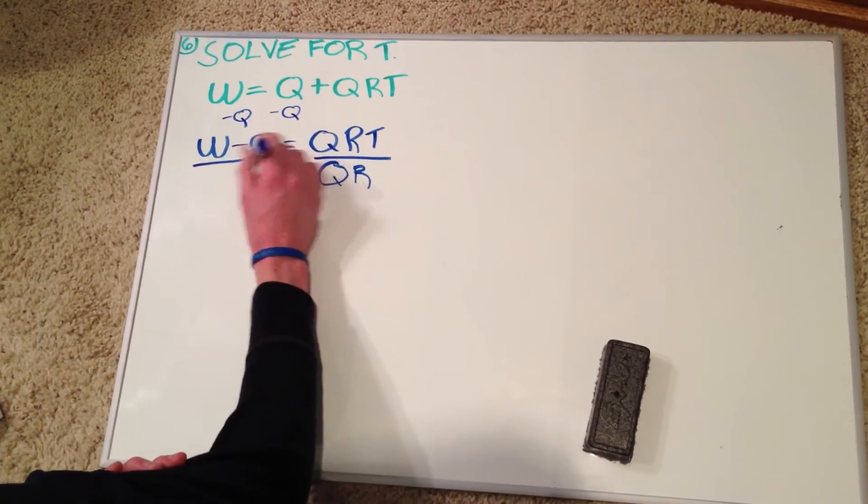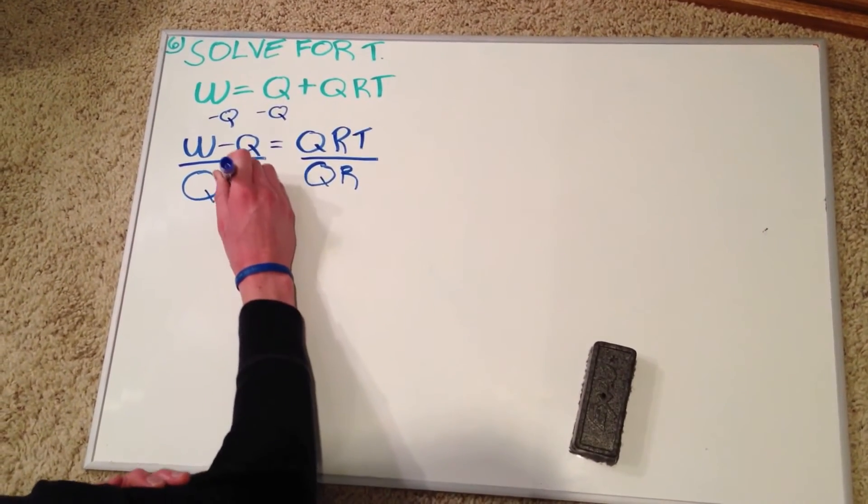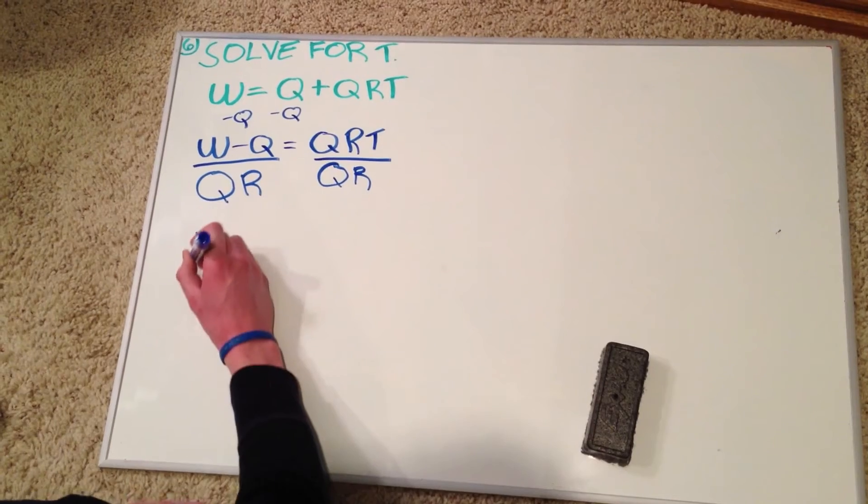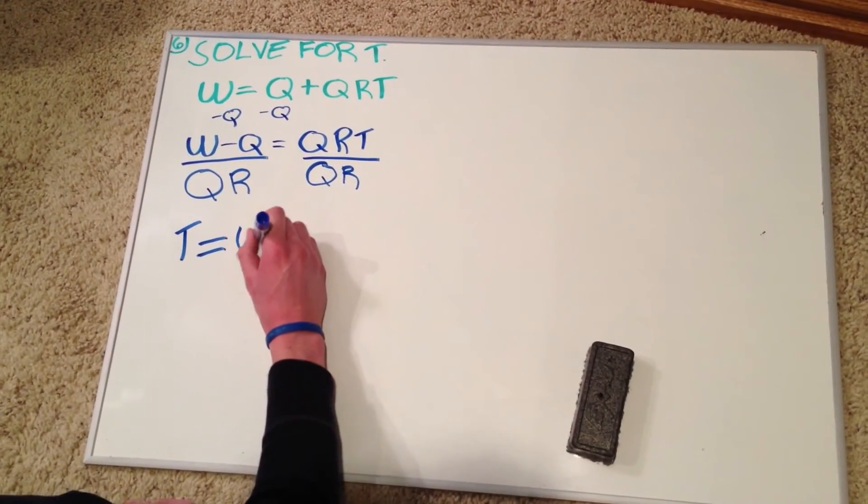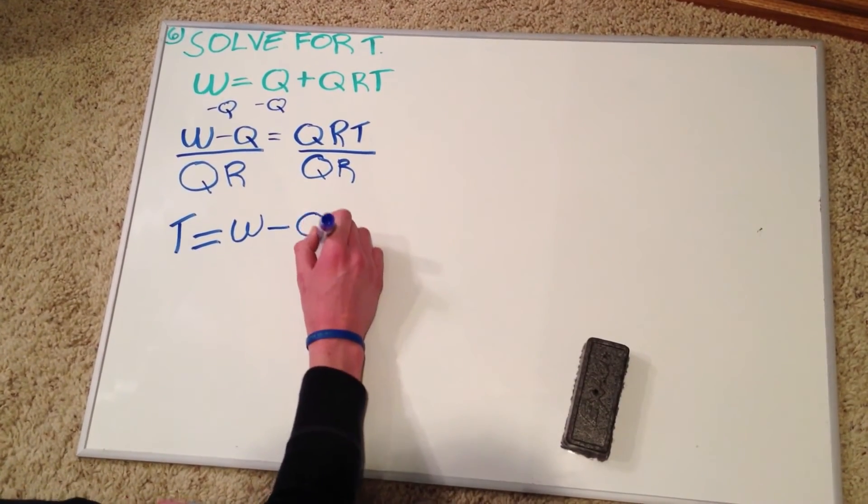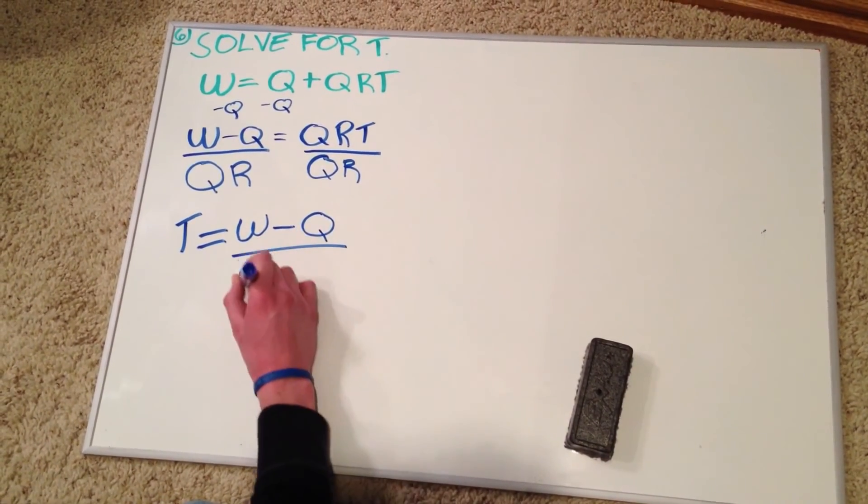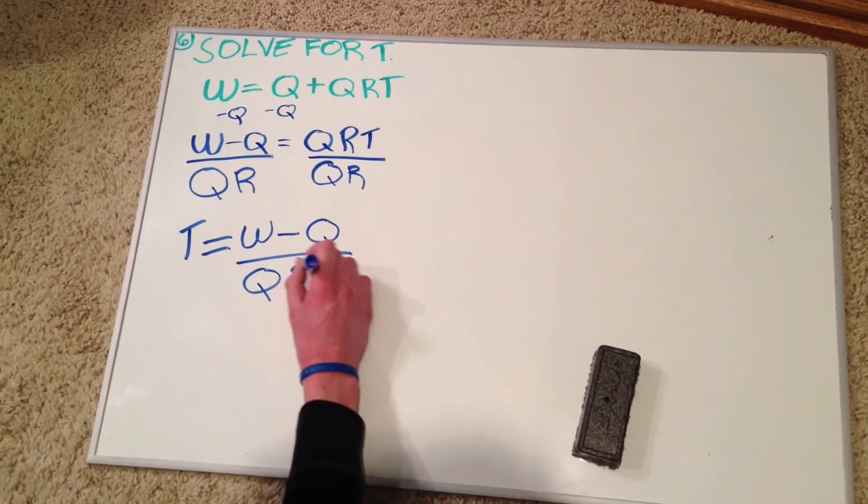Because we did it to that side, we'll do it to this side. Divide by QR. So that gives us T equals W minus Q divided by QR.